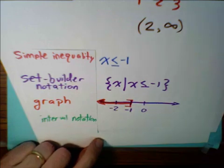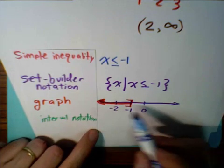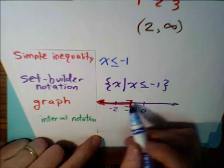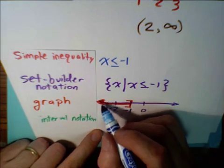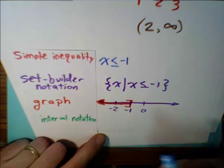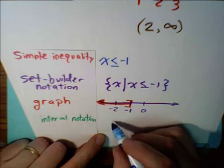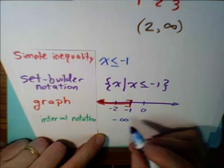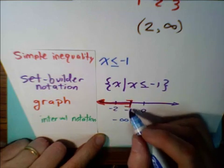Now to do the set builder notation, the set builder notation, like we've said before, indicates one shaded region. The left-hand side of this region on the number line is actually negative infinity. The right-hand region is negative 1.